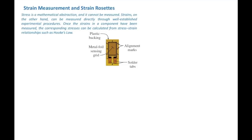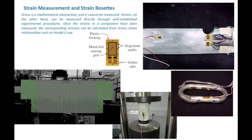Before talking about the theoretical part, let me show you some examples. Those of you who are taking the lab have seen some of those strain gauges on elements and have worked with some of them. They are tiny, small elements attached to the surface of an element and measure the magnitude of small deformations that might be caused by temperature, force, or any other thing.